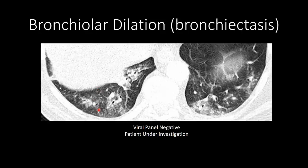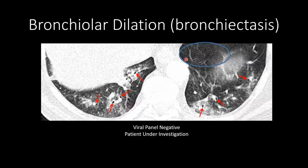Another finding being reported is bronchiolar dilation in the region of pulmonary abnormality. We have areas of ground glass opacity that are peripheral and starting to have superimposed consolidation. Notice the bronchi within these regions of airspace opacification are dilated and more prominent than in the part of the lung without ground glass or consolidation.